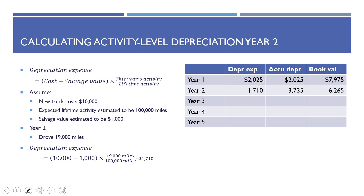In year two, suppose you drove 19,000 miles. Using the same formula: ($10,000 minus $1,000) times (19,000 divided by 100,000) equals $1,710. That's your depreciation expense in year two. Accumulated depreciation becomes $2,025 plus $1,710, or $3,735, and book value is $6,265. That's how you account for activity level depreciation.